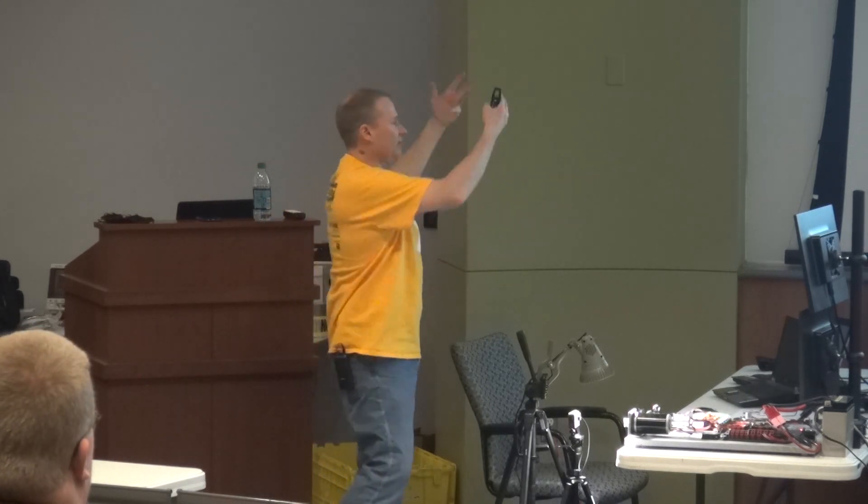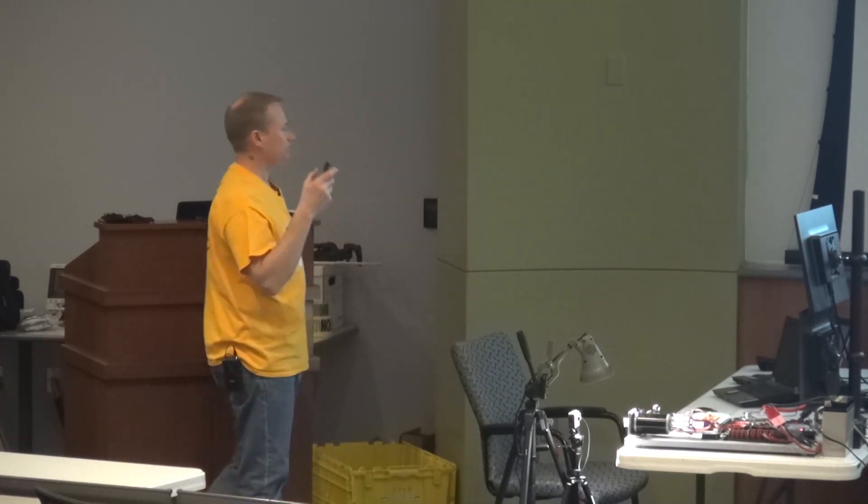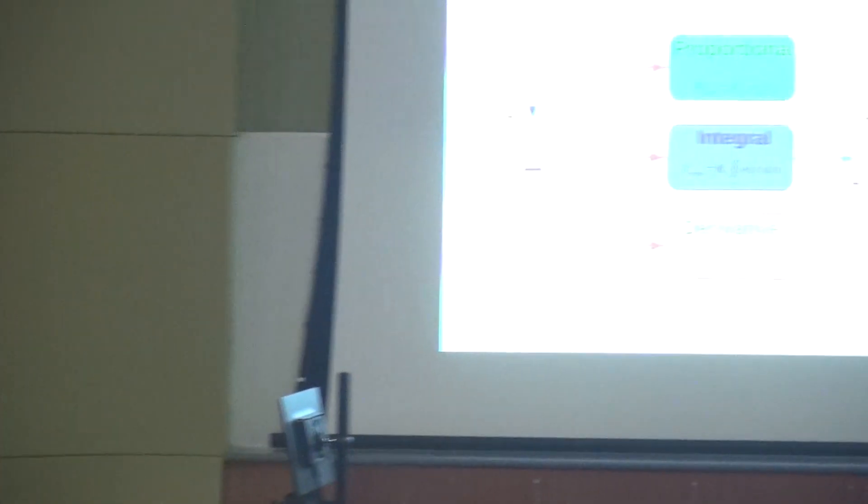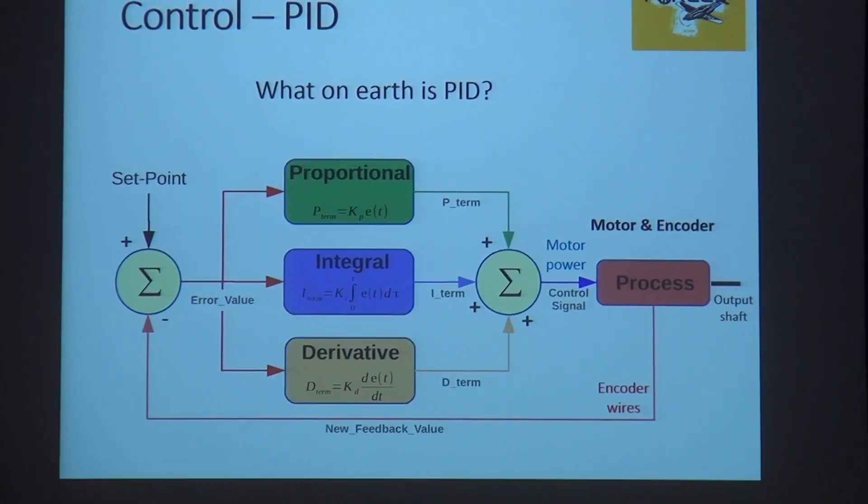We're going to do a little demonstration later where you'll see — with humans as encoders and motors — what all happens. There are values P, I, and D, and some other things. That's how I tell the controller about my system so it knows how to land right on the spot.